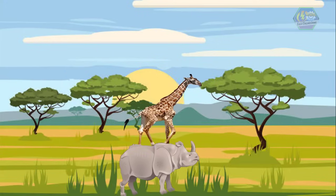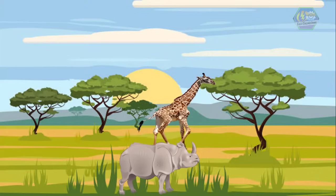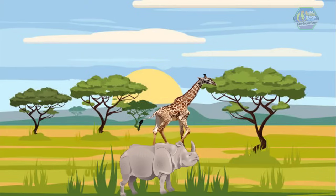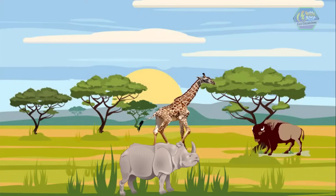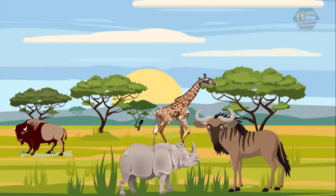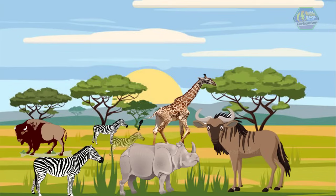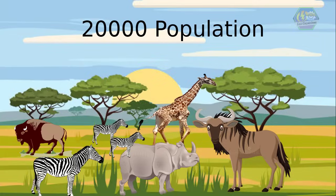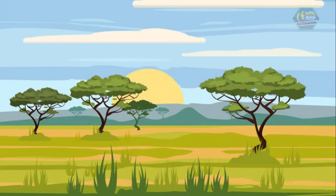Speaking of the animals in grasslands, there are lots of them. That's because they lack shelter for predators, thus providing an abundance of food for herbivores. Herds of animals living in savannas are enormous — herds like buffaloes, wildebeest, and zebras — and they could have a population of 20,000 in a herd.